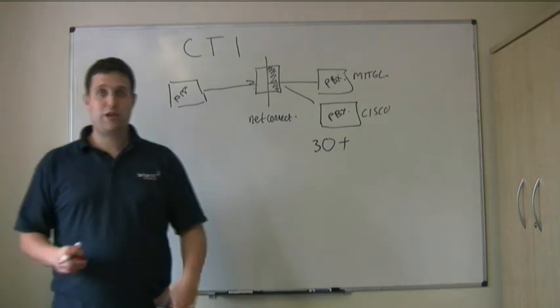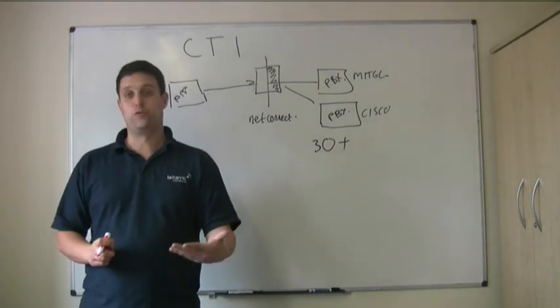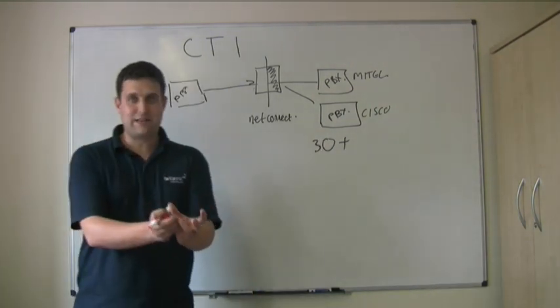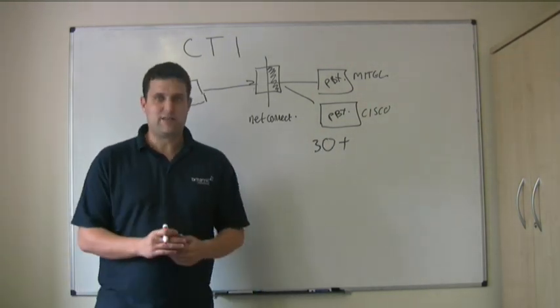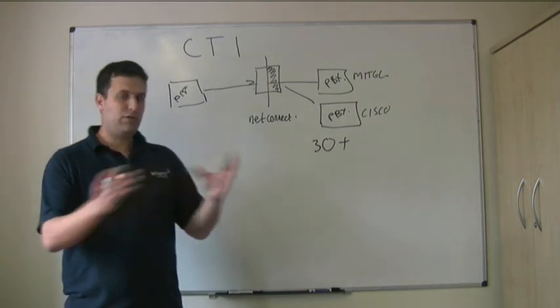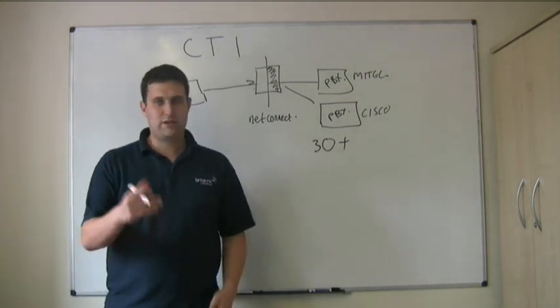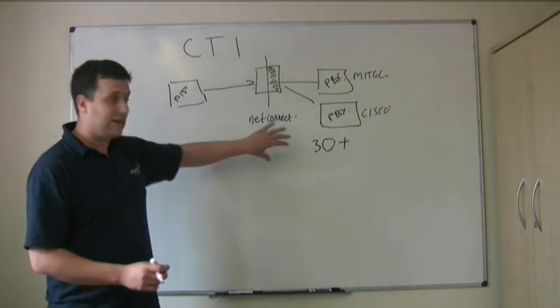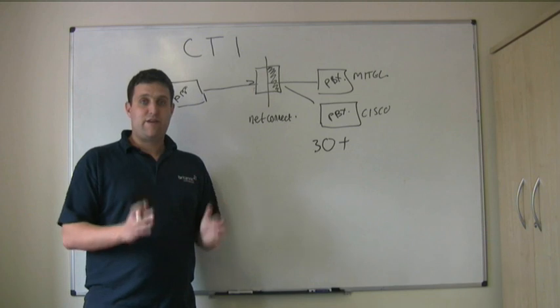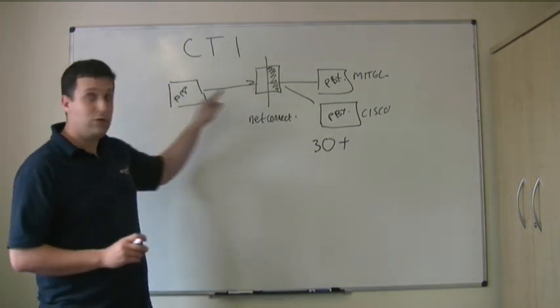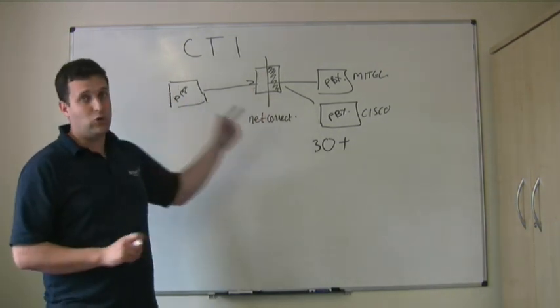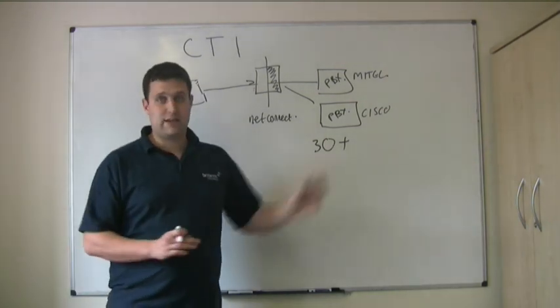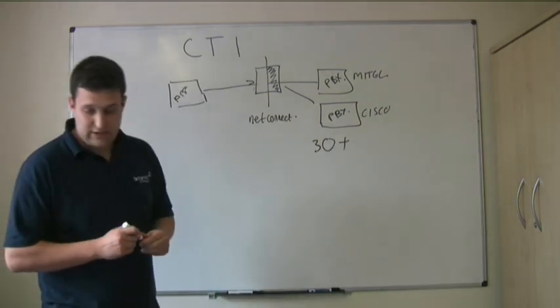normally applications want to know about users and calls, whereas the telephone systems are talking about handsets and devices. And so you have to write an awful lot of code that sits in between to try and track these two things. And what we've done is we've encapsulated all that nasty stuff inside NetConnect, so that it's very simple. You can talk about users and you can talk about calls and whatever you need to talk about to your telephone system and NetConnect does the work.